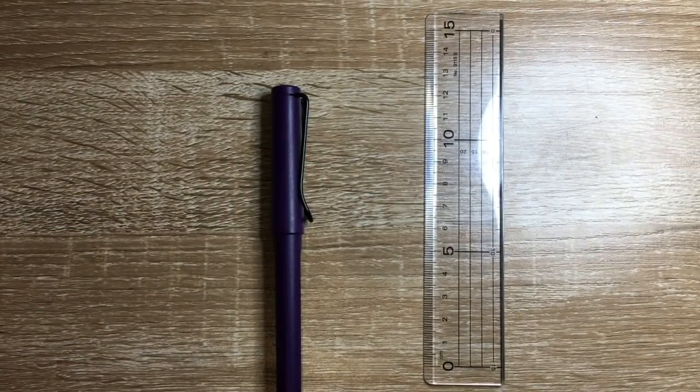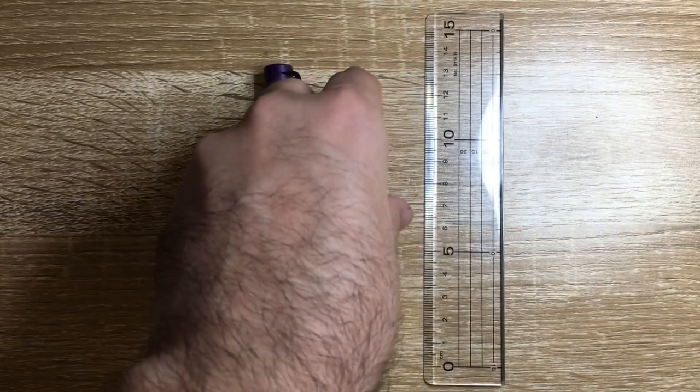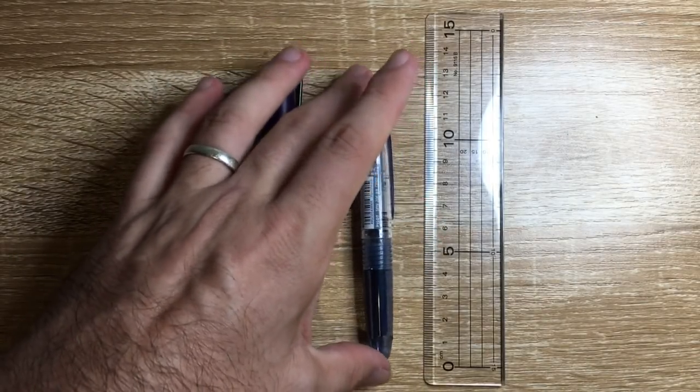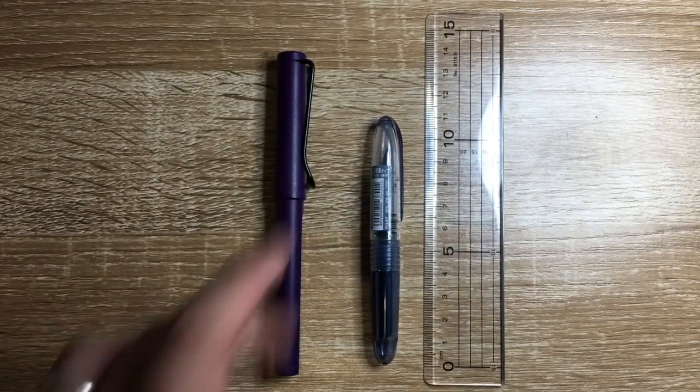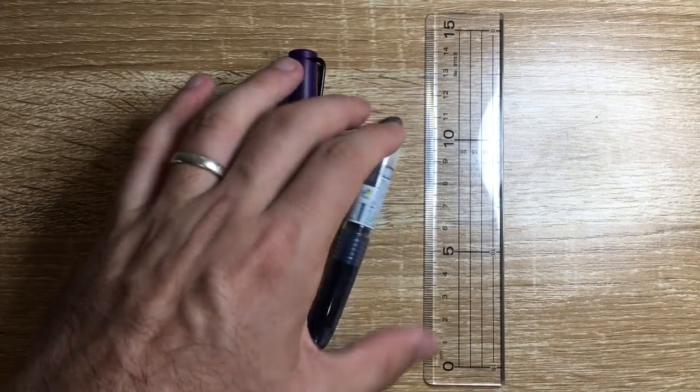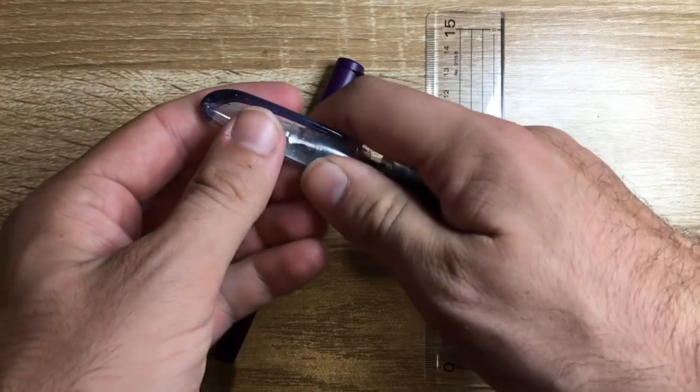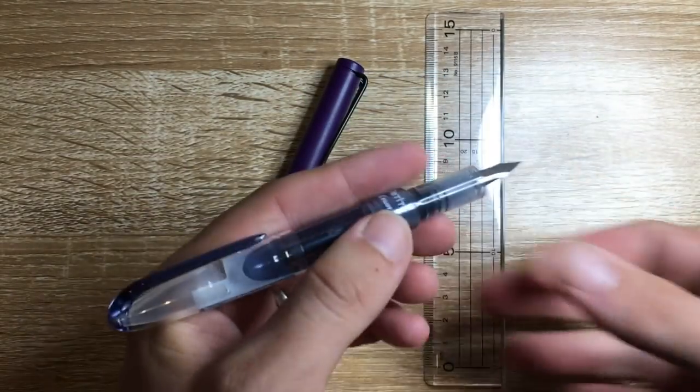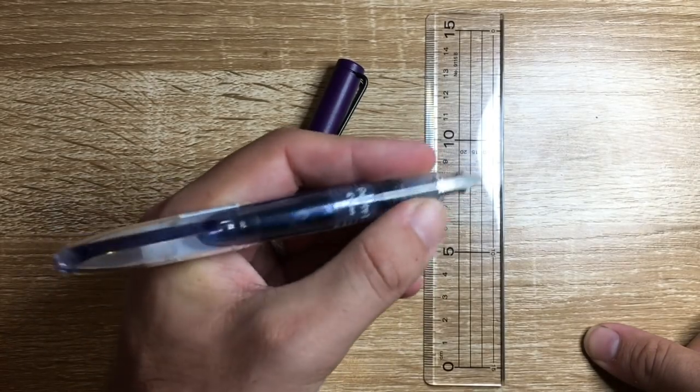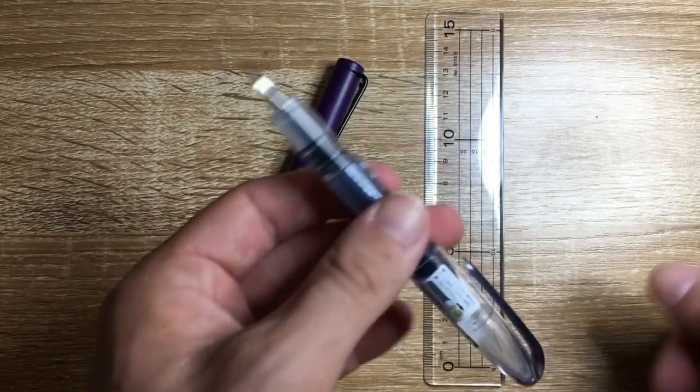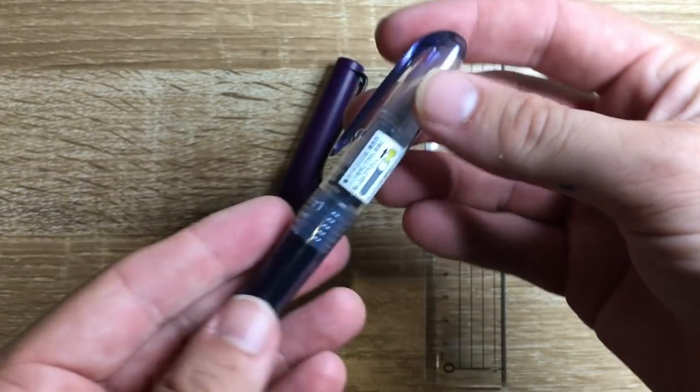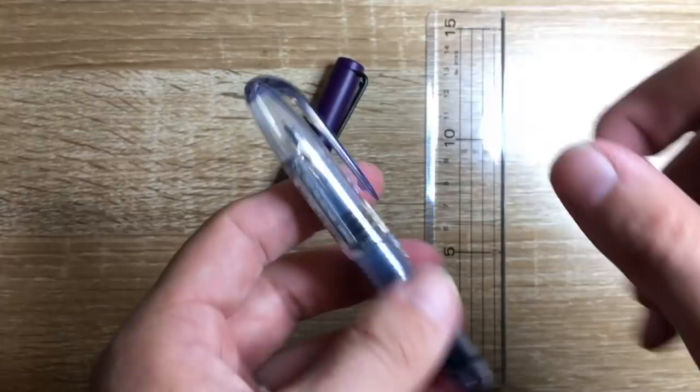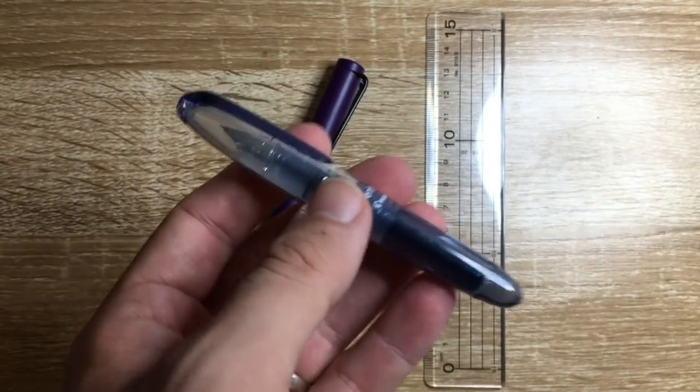Next on the list is what is considered by many to be a disposable fountain pen pocket pen. It is the Pilot Petit One. This is a plastic little pen. It just takes little cartridges that come with it, and you can buy them separately. But this is a really affordable pen. It posts nice and secure. It's got a good section on it. It's not slippery plastic.